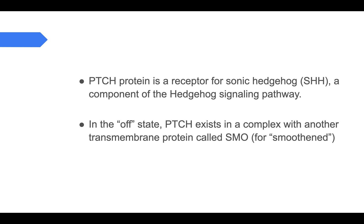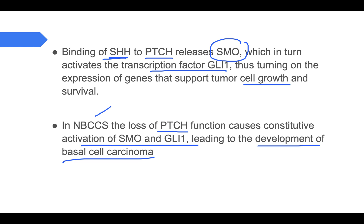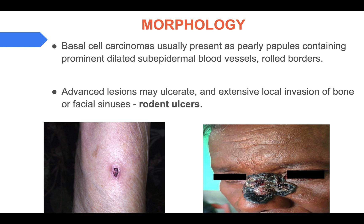To summarize: PTCH is the receptor protein for SHH (sonic hedgehog) and is a component of the hedgehog signaling pathway. In the off state, PTCH is in complex with SMO and there is no transcription. Binding of SHH to PTCH releases SMO, which activates transcription factor GLI-1, driving cell growth. In Gorlin syndrome, loss of PTCH function leads to constitutive activation of SMO and GLI-1 without any sonic hedgehog, resulting in basal cell carcinoma.